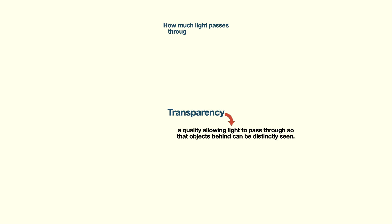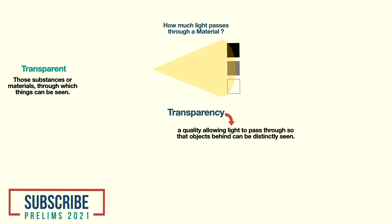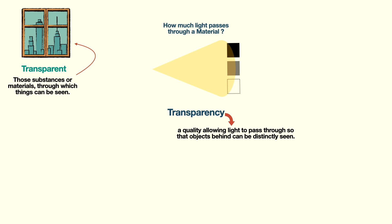Next we have transparency. This relates to the property of a material which allows or disallows light to pass through it, and to what extent. Every material is different in its composition, so they behave differently when exposed to light. Based on this ability, materials are classified into three types. The first type is transparent — these materials let light pass through themselves completely, which allows us to see clearly through them. For example, the glass windows we find in our homes or offices.